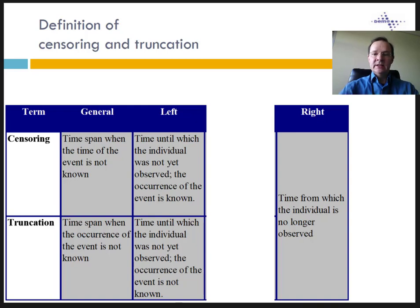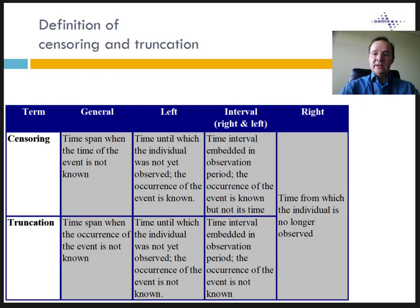If an in-migrant has a child in a study area and you don't know if she had another child before in-migrating, then you don't know if you should consider the child born in the study area as her first, second, third, or even tenth child. Interval censoring, also named gap, indicates that right censoring was followed by left censoring and that the occurrence of the event is known. Interval truncation means the same except that the occurrence of the event is not known, with the same difficulty as for left truncation. In event history analysis, we can deal fairly easily with right, left, and interval censoring, but it is impossible to deal correctly with left and interval truncation without making strong assumptions. Therefore, it is necessary to avoid truncation at all costs.